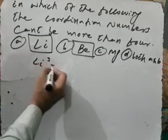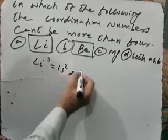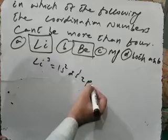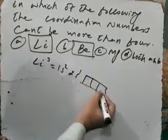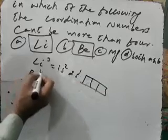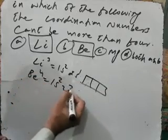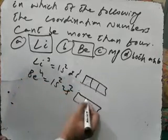As we know, lithium atomic number is 3: 1s2 and 2s1. Here 2p is empty. And beryllium atomic number is 4: 1s2, 2s2, and 2p here are empty.